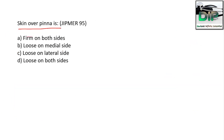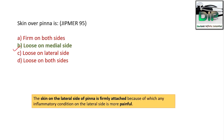Next question: Skin over the pinna is — Option A, firm on both sides; Option B, loose on the medial side; Option C, loose on the lateral side; Option D, loose on both sides. The correct answer is loose on the medial side. The lateral skin of the pinna is firmly attached, so it is more painful if any inflammatory process occurs on the lateral side. So it is: loose on the medial side and firm on the lateral side — due to this firmness, inflammation is more painful on that side.